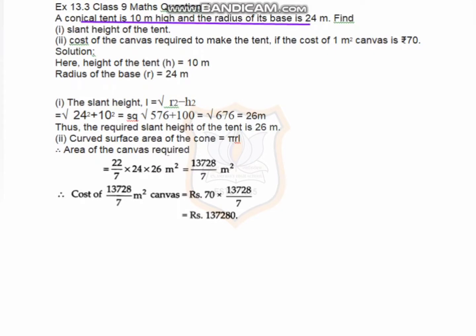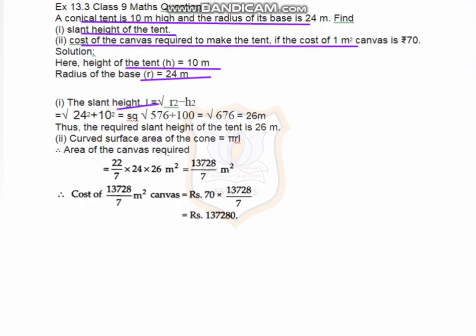Question number four: the diameter is 24 meters and we have to find the slant height of a tent. We know that l equals √(r² + h²). We also need to find the cost of canvas required to make the tent if the cost of 1 meter square is rupees 70. The radius is 24 and the height is 10. Note: slant height l equals √(r² + h²) — this is a plus sign, not minus.